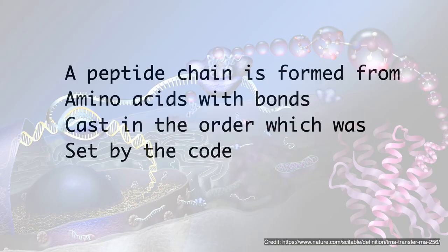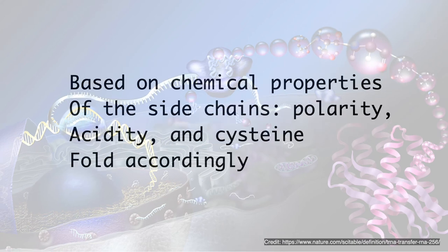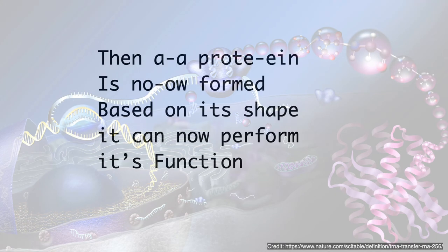A peptide chain is formed from amino acids with bonds cast in the order which was set by the code. Based on chemical properties of the side chains — polarity, acidity, and cysteine — the chain folds accordingly. Then a protein is now formed.